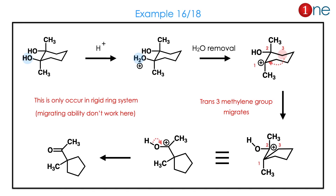Let us look at the next question. You have cyclohexane, a rigid system, with alcohol in the equatorial position. Once you protonate, you have the cation. The trans group here is the ring methylene group, so it migrates and ring contraction happens. The 6-membered ring becomes a 5-membered ring, and the cation is quenched as the ketone. Always remember: the trans group always migrates in the ring system.